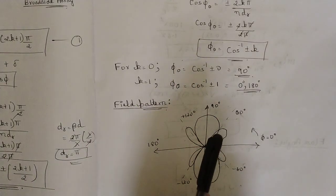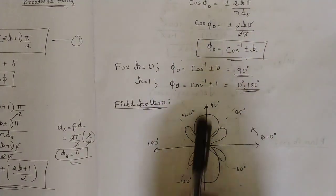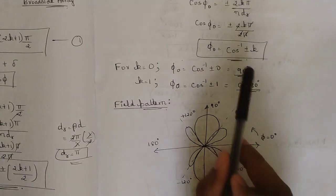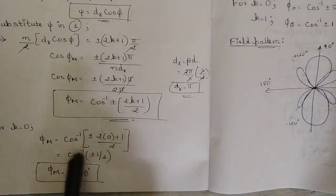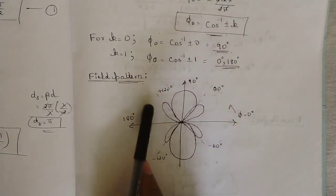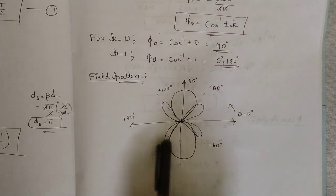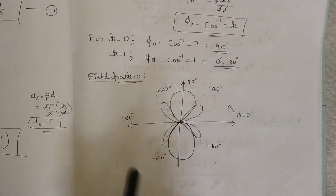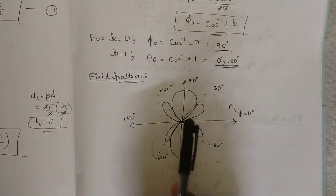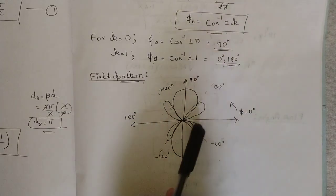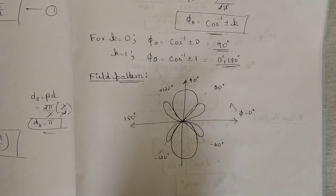With these null directions, the field pattern can be drawn. The null directions (0°, 90°, 180°) are all on the axis. The minor lobe maximum angles are ±60°. Mark +60°, -60°, and the opposite angles +120° and -120°. With respect to these angles, draw the major lobe, and the minor lobes are drawn between the null directions — giving the complete field pattern for this problem.